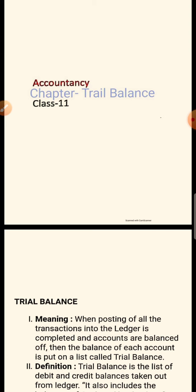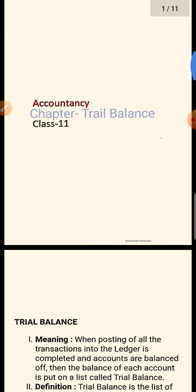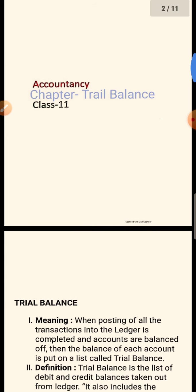After recording general entries, we need to calculate balances, so we prepare the ledgers. In the ledger we calculate all the different account balances. Now we want to do the trial balance. We are making the trial balance so that we can check the accuracy — that everything is correct or not — because we have made many general entries and many ledger accounts.